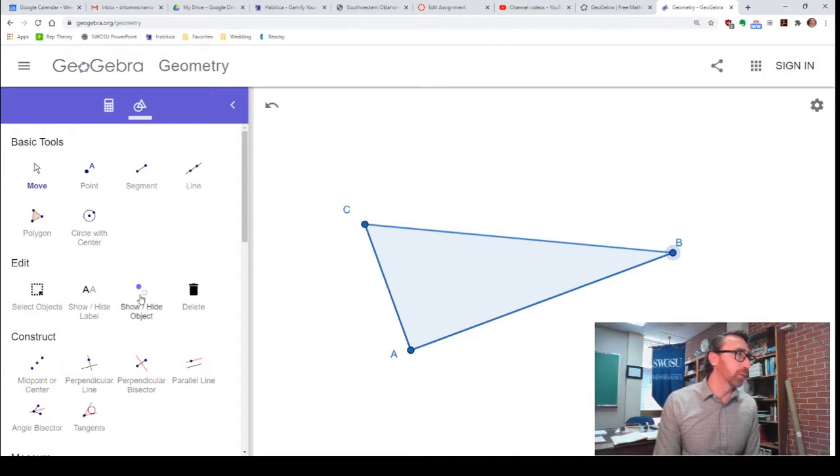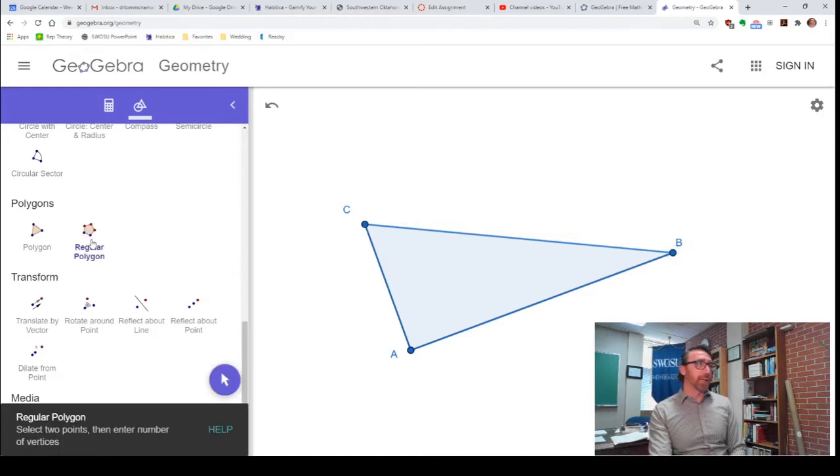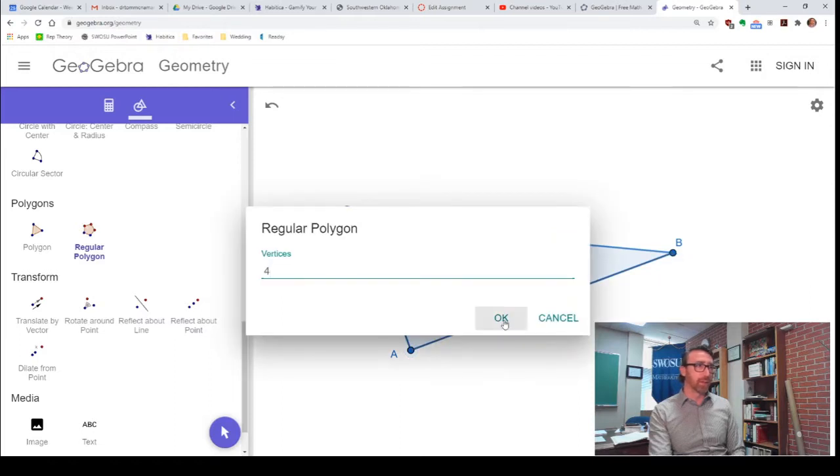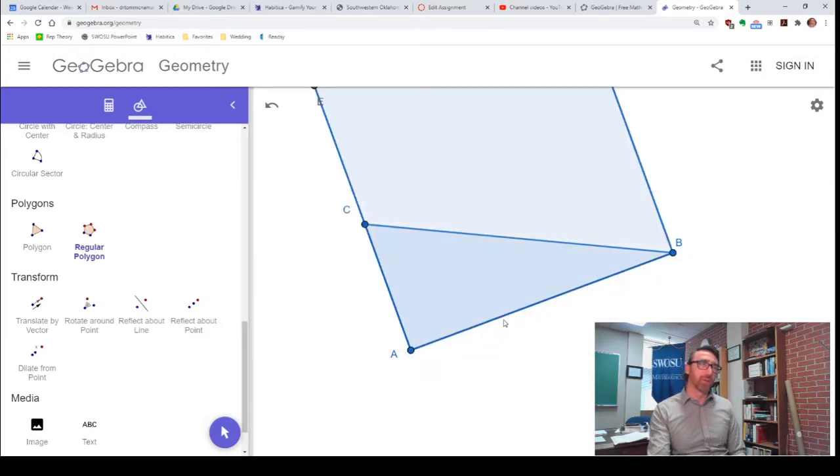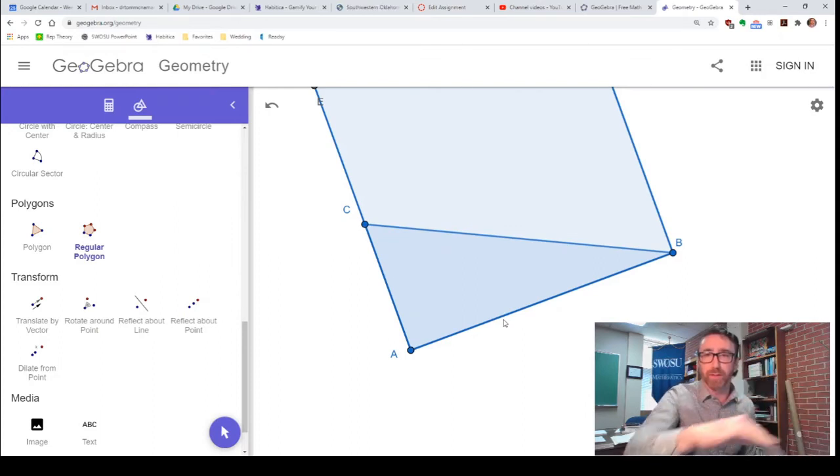I want squares on the sides of my right triangle. So, I'm going to once again go to the regular polygon tool. And it says, select two points, enter the number of sides. I want squares on each of the sides. So, let's start with this. A, B. And I want four sides. Great. Now, I really wanted that not covering the triangle, but on the other side.